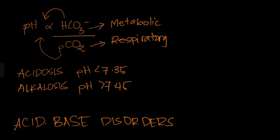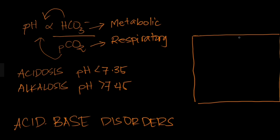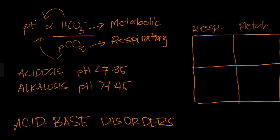Now we are ready to talk about the various acid-base disorders. We will explain these using a diagram. We'll put 'respiratory' here and 'metabolic' here, then this would be for acidosis and this would be for alkalosis. Each quadrant of this square describes a type of acid-base disorder.